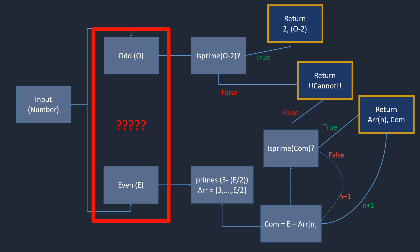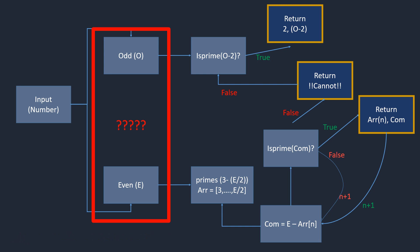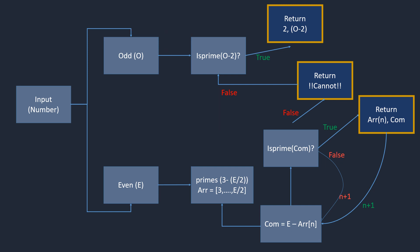The reason we check odd or even is that if you observe the set of prime numbers, the only even prime number is 2, and all remaining primes are odd. We know that the sum of 2 odd numbers forms an even number, and the sum of an even and an odd number forms an odd number. So if a number is odd and can be expressed as the sum of 2 primes, one of those primes must be 2.